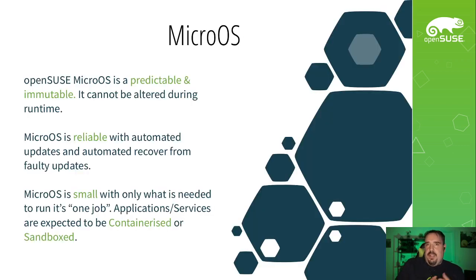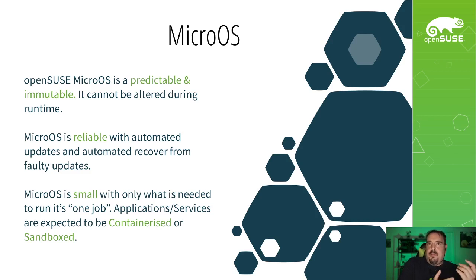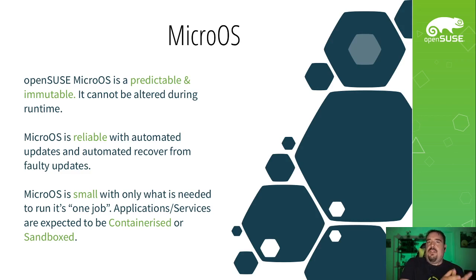And so we've made MicroOS. At its heart, MicroOS is OpenSUSE's answer to targeting this new world. It's a predictable and immutable operating system. Once you deploy it, you cannot alter it during runtime — the root file system is read-only. Nothing's going to change while the system is running.